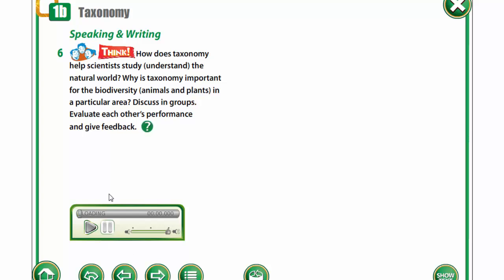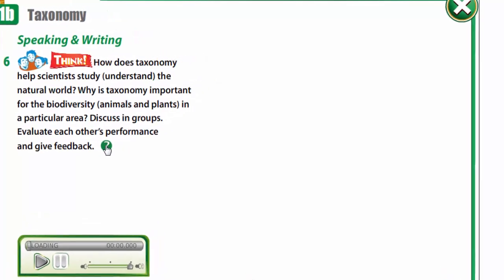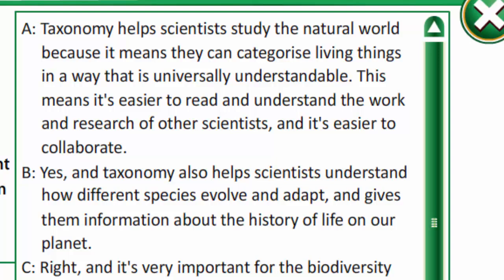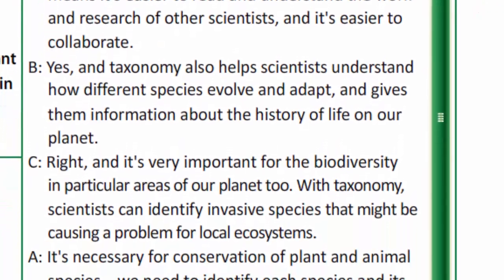Now listen. How does taxonomy help scientists study or understand the natural world? Why is taxonomy important for the biodiversity of animals and plants in a particular area? Taxonomy helps scientists study the natural world because it means they can categorize living things in a way that is universally understandable. This means it's easier to read and understand the work and research of other scientists, and it's easier to collaborate. Taxonomy also helps scientists understand how different species evolve and adapt, and gives them information about the history of life on our planet.